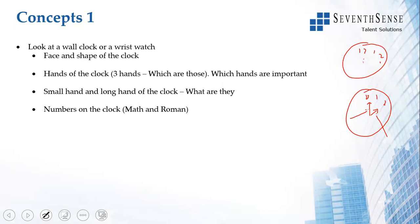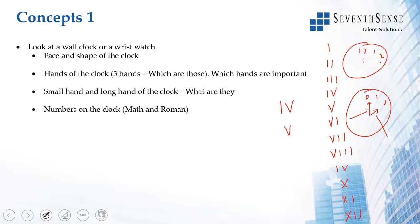The numbers on the clock can be in math (Arabic) or Roman numerals. In Roman numerals, 1 through 12 correspond to the standard math numbers 1 to 12. You just need to know that these correspond to 1 to 12 in regular numbers.